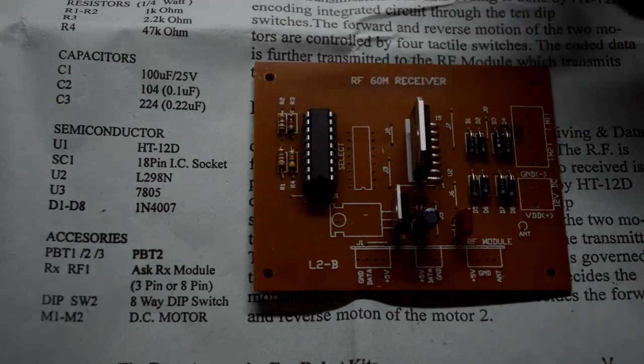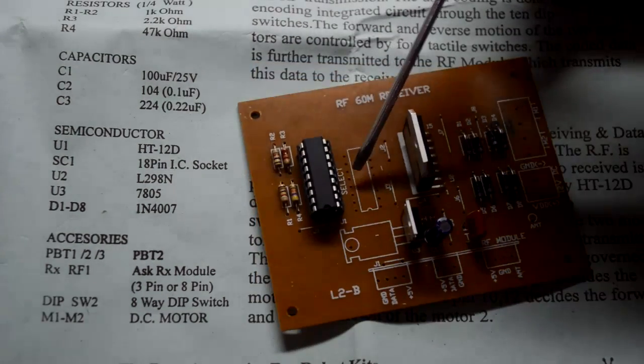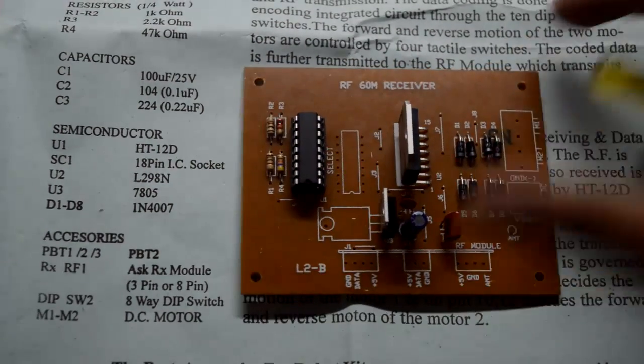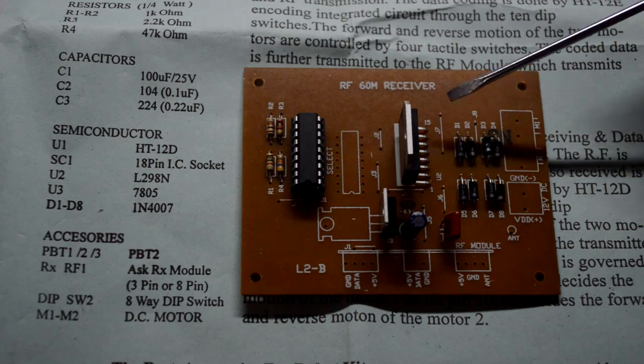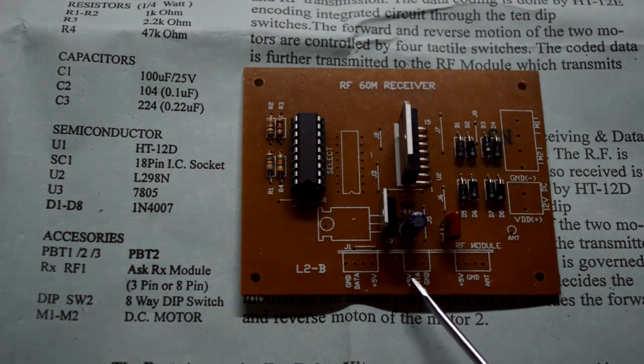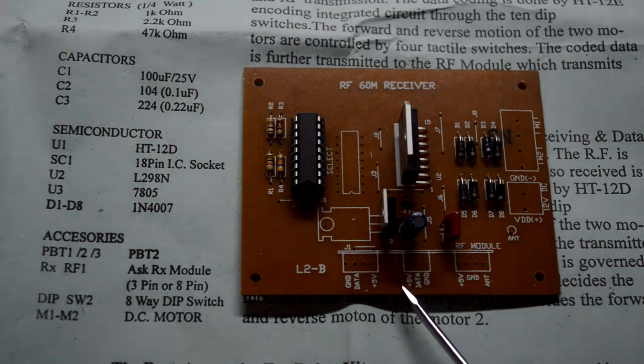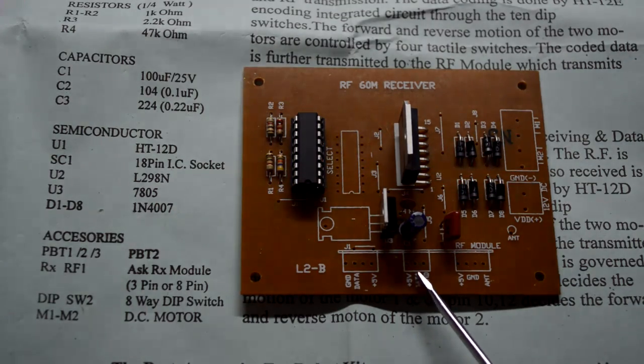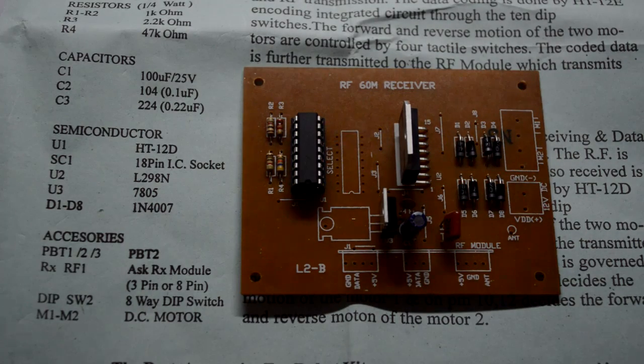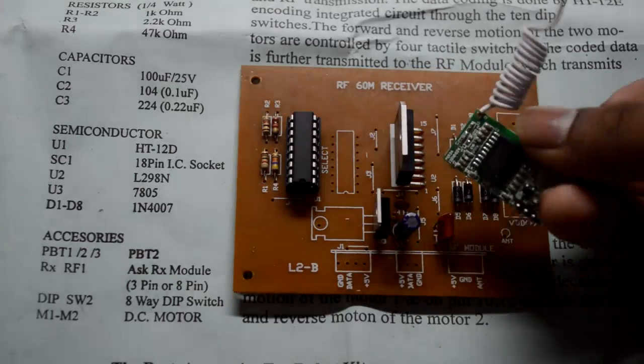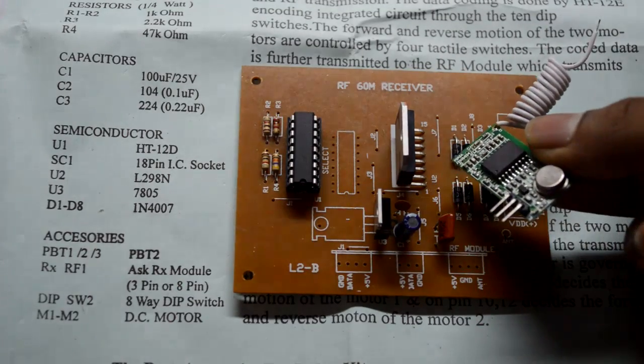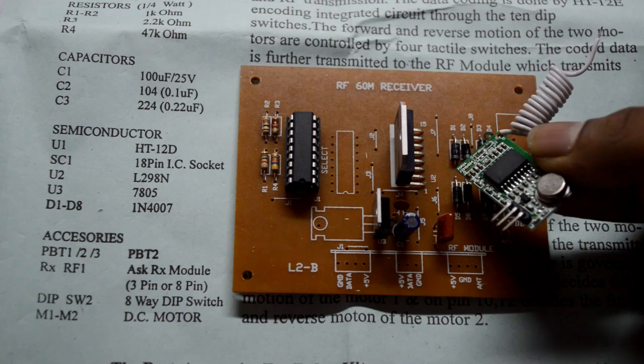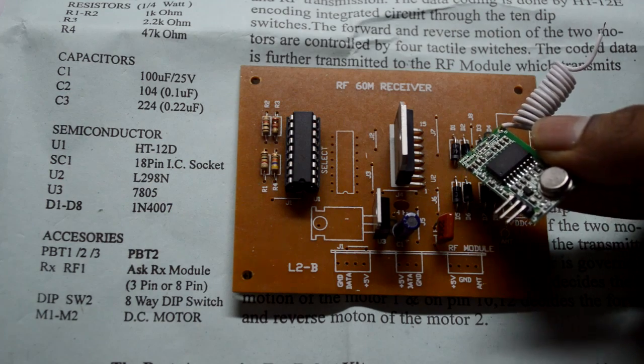Now the next thing remaining on your receiver PCB is the connection for the battery and your motor, your eight-way DIP switch which goes over here, jumpers which are basically just single strand wires, and your RF module. Now there is a unique way of soldering your RF module over here. We have this three pin RF module, one of these three pins is five volt, the second one is data, and the third one is for ground.